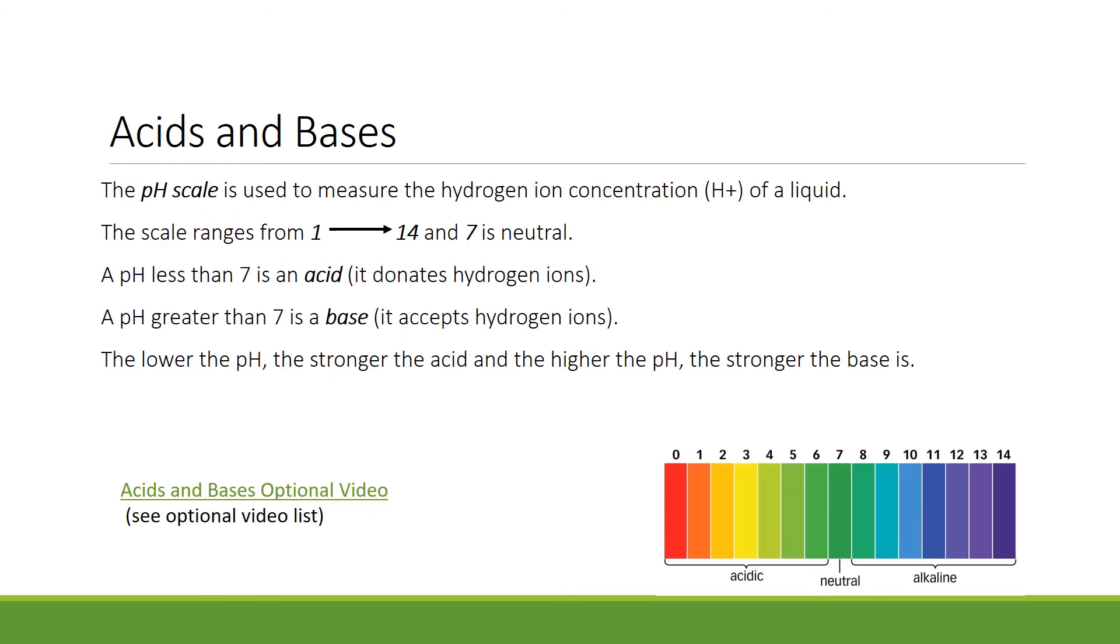The pH scale is used to measure the hydrogen ion concentration of a liquid, or to tell how acidic or basic a substance is. The scale ranges from zero to fourteen, and seven is neutral. A pH less than seven is acidic. It donates hydrogen ions. A pH greater than seven is basic. It accepts hydrogen ions. The lower the pH, the stronger the acid, and the higher the pH, the stronger the base.